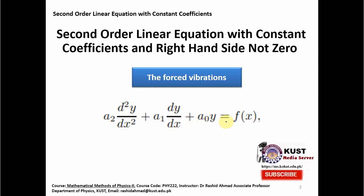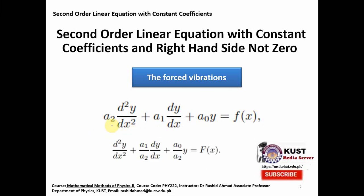The different thing in this equation is the right hand side, which is now some function of x. It could be a trigonometric function or some other complicated function. We can put this equation into a slightly better form by dividing the whole equation by the constant a2. When we divide by a2, the first term's a2 cancels, the second term gives a1/a2 · dy/dx, and the third term gives a0/a2 · y. We then call f(x)/a2 equal to capital F(x), and this F(x) will represent some kind of force.